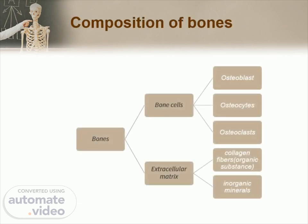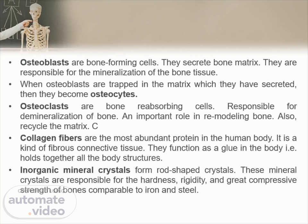Bones usually comprise bone cells and extracellular matrix. Bone cells are further divided into osteoblasts, osteocytes, and osteoclasts, whereas the extracellular matrix comprises collagen fibers and inorganic minerals. Osteoblasts are bone-forming cells — they secrete bone matrix and are responsible for the mineralization of bone tissue. When osteoblasts are trapped in the matrix which they have secreted, they become osteocytes. Osteoclasts are bone-resorbing cells, responsible for demineralization of bone.